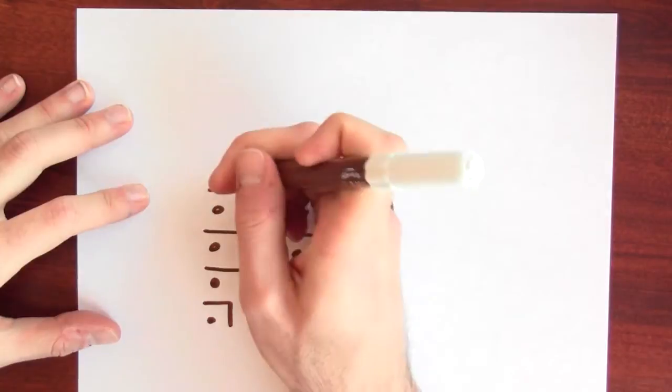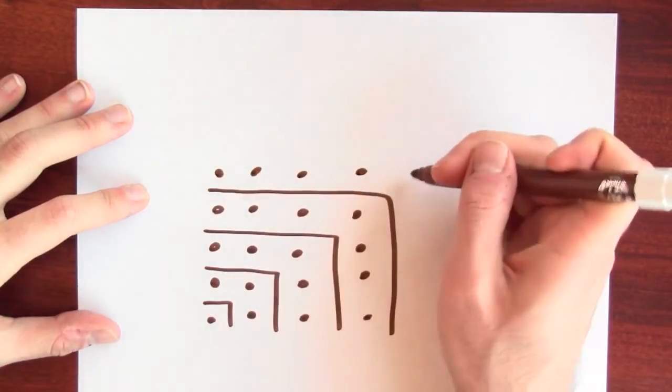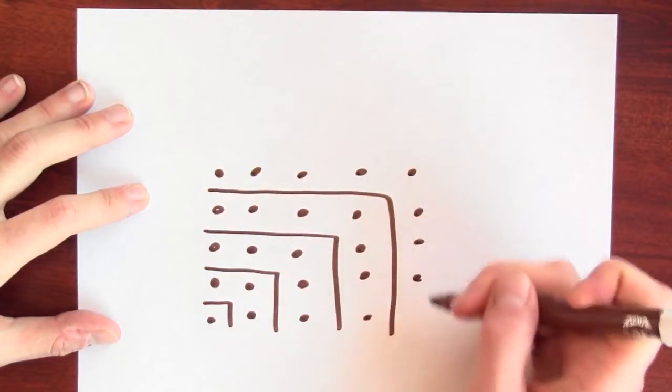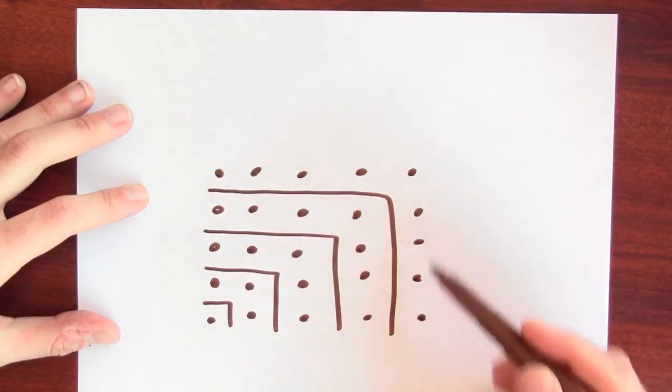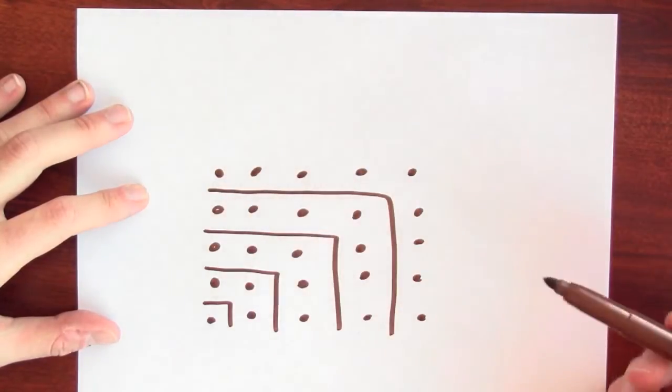And then I'll draw 9 dots: 1, 2, 3, 4, 5, 6, 7, 8, 9. And that's 5 squared. 1 plus 3 plus 5 plus 7 plus 9 is 5 squared, 25.